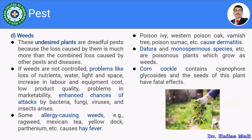Then the weeds. Weeds are unwanted growth in the farm — undesired plants known as the most dreadful pest, because the loss caused by them is much more than the combined loss caused by other pests. These weeds capture the nutrients from the soil and whatever fertilizers are applied, reducing the growth of the main crop or medicinal plant. One should think about the control of weeds in the farm.